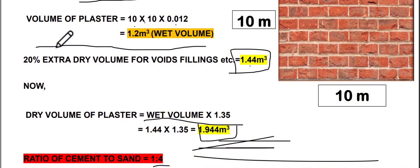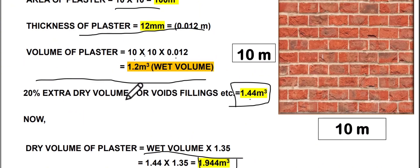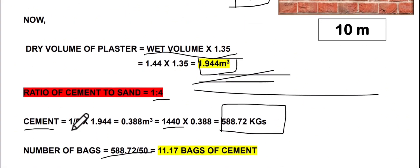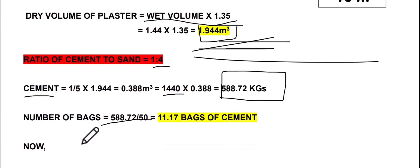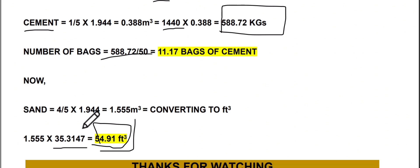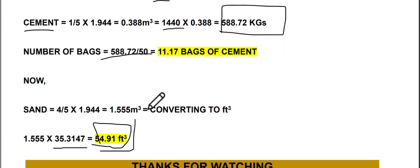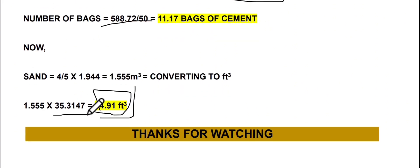So once again, if we have a 10 meter by 10 meter wall and ratio is 1:4, with this process: first find volume of plaster, wet volume. To convert wet to dry, multiply by 1.35. Once dry volume comes, decide your ratio. Through ratio, first find cement quantity. If cement quantity comes in cubic meters, multiply by 1440 to convert to kgs. To convert kgs to bags, divide by 50. Next part is sand. For sand, use the same formula, 4 upon 5, and your dry volume. To convert to cubic feet, multiply by 35.3147 and your sand quantity in cubic feet will come.